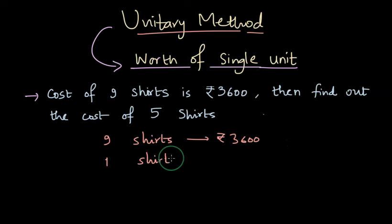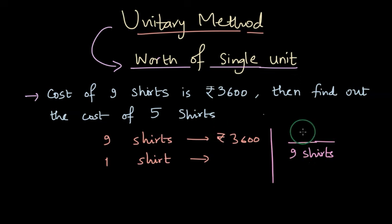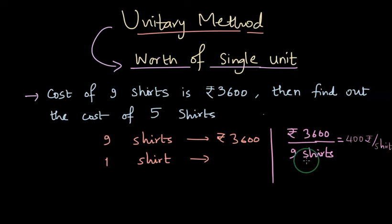First, find out the cost of one shirt. We take the unit in the denominator — so we write 9 shirts — and write the worth of it in the numerator, which is 3600. This gives us 400 rupees per shirt, meaning one shirt costs 400 rupees.